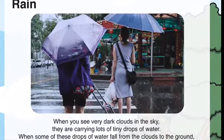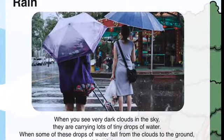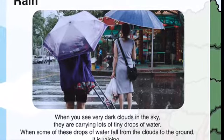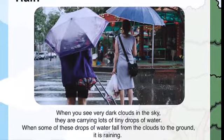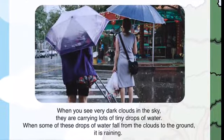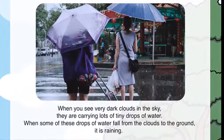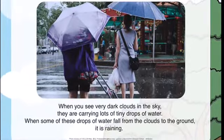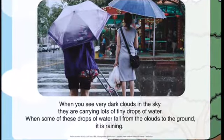Rain. When you see very dark clouds in the sky, they are carrying tiny drops of water. When some of these drops fall from the clouds to the ground, it is raining.